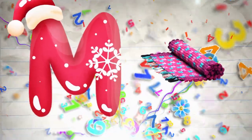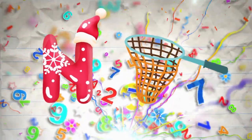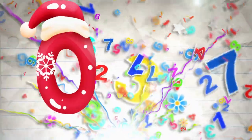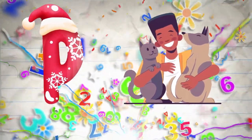M is for mat, m-m-mat. N is for net, n-n-net. O is for orange, o-o-orange. P is for pet, p-p-pet.